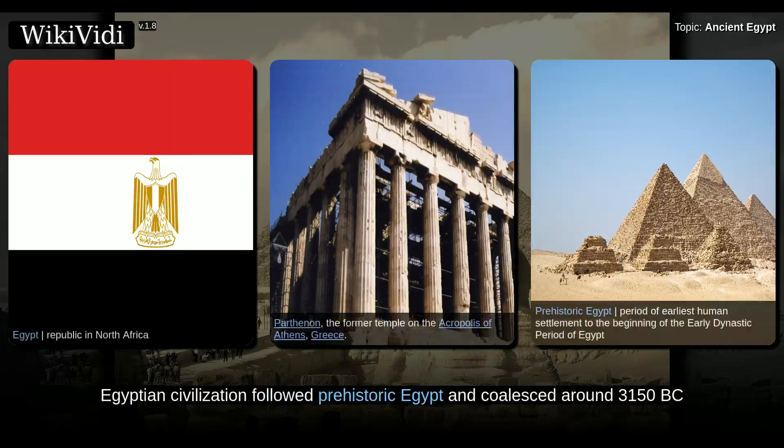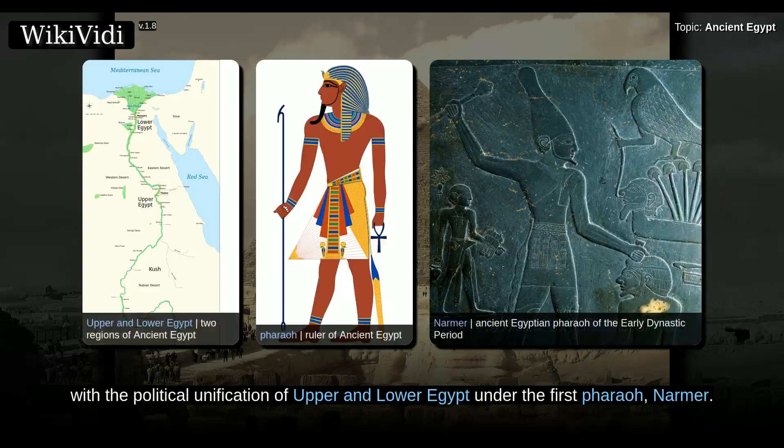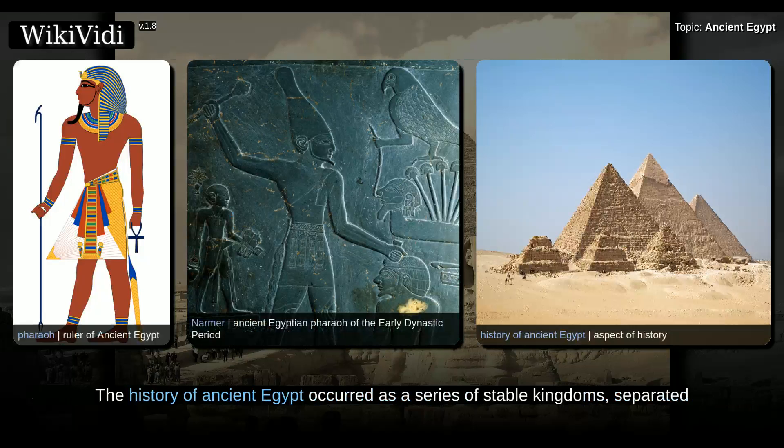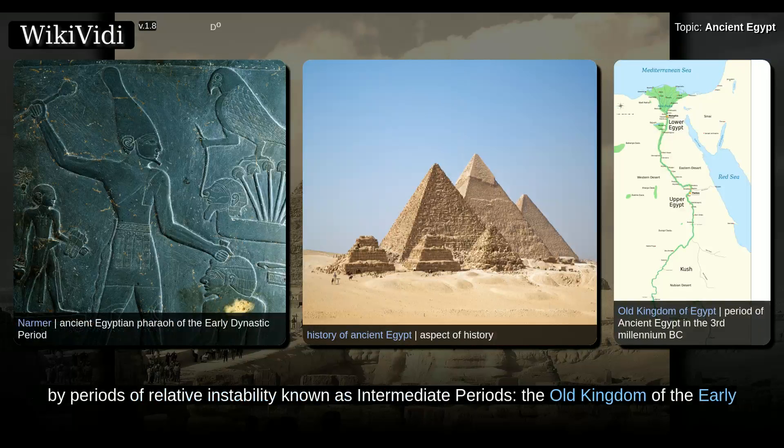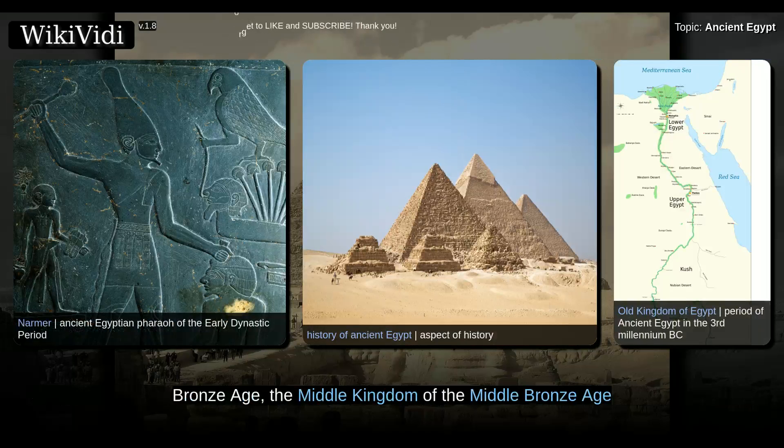Egyptian civilization followed prehistoric Egypt and coalesced around 3150 BC, with the political unification of Upper and Lower Egypt under the first pharaoh, Narmer. The history of ancient Egypt occurred as a series of stable kingdoms, separated by periods of relative instability known as intermediate periods.